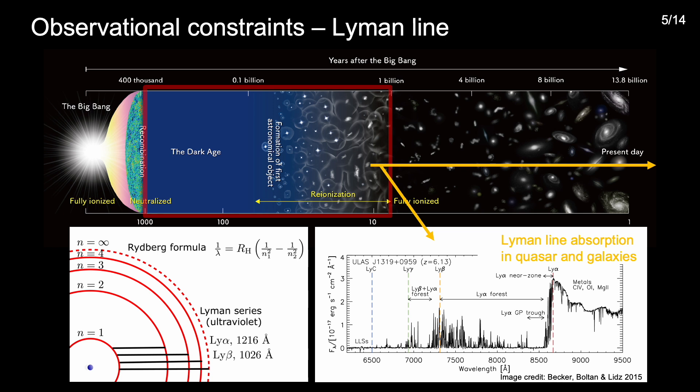Finally, Lyman series photons emitted when electrons in hydrogen atoms drop from an n greater than one orbital down to the ground state have a very high optical depth to absorption by neutral hydrogen. As such, between the middle and end of reionization, observations of Lyman line absorption in high redshift galaxies and quasars using a range of techniques enable one to infer strong constraints on the hydrogen neutral fraction at those times.